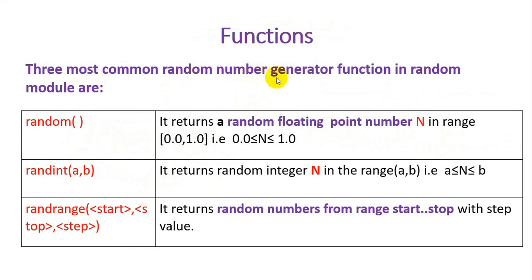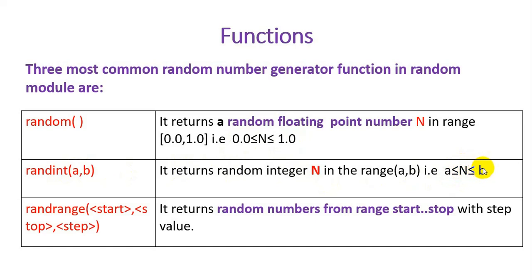Three most common random generator functions in the random module are given here. The first one is the random() function. It returns a random floating point number n in the range between 0.0 to 1.0, with lower bound 0.0 and upper bound 1.0. The second is randint(a, b) — we can pass values a and b, and it returns a random integer n in the range of a and b, meaning n is greater than or equal to a and lesser than or equal to b.